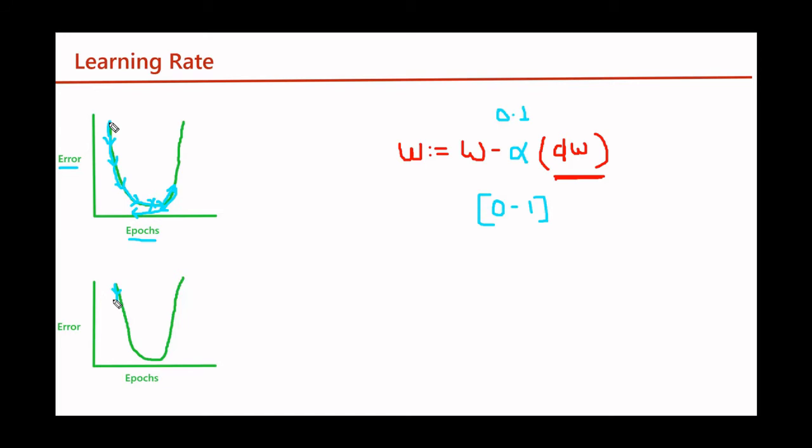If we are on one part of the error graph, then due to learning rate we will shift from one part to the other part. This problem occurs due to high learning rate and is called overshooting.